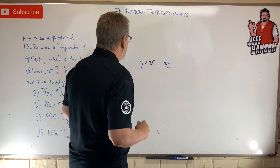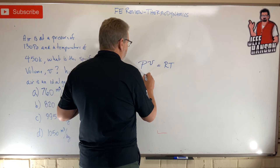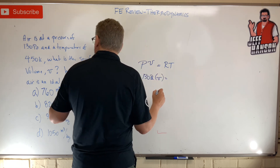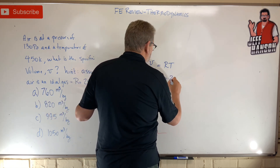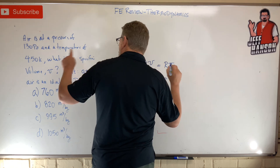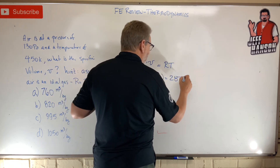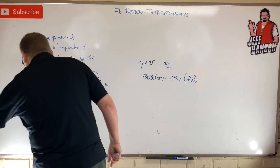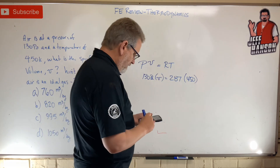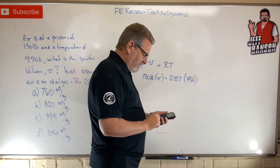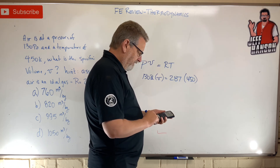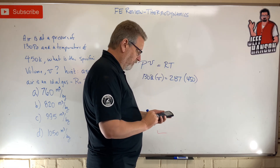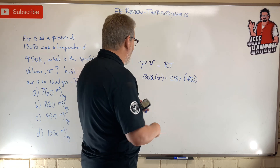So: pressure 130 pascals times specific volume equals R — given as 287 — times T, which is already in Kelvin at 450. Let's get the calculator: 287 times 450 equals, divided by 130 equals — 993.5.